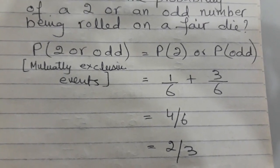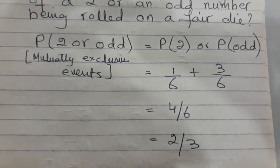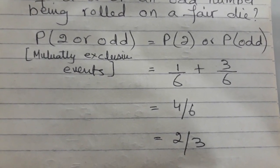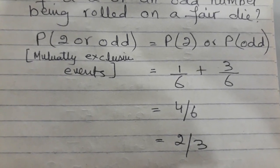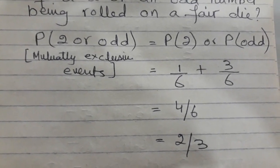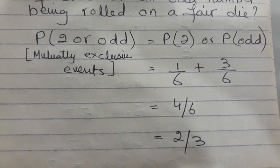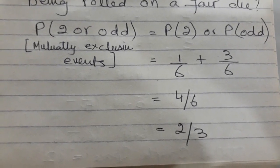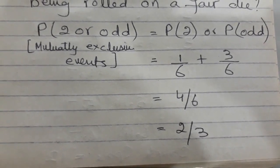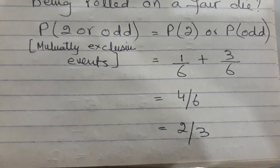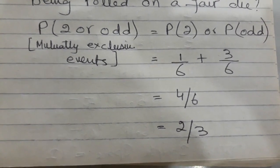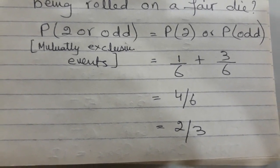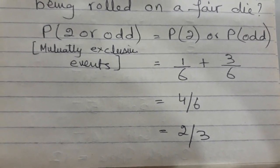With this explanation, we have completed the single events section — part one of the syllabus. In my next video, which is number two on probability, I will cover combined events using possibility diagrams and tree diagrams. Please watch that video for the complete concept of probability. If you learned something from this video, please like and subscribe — you'll get automatic notification whenever I upload. Thank you very much for watching, bye bye.